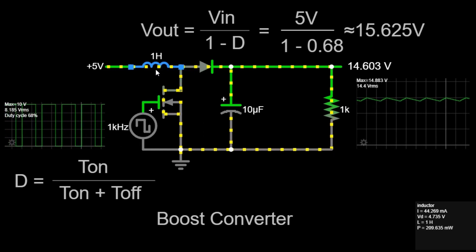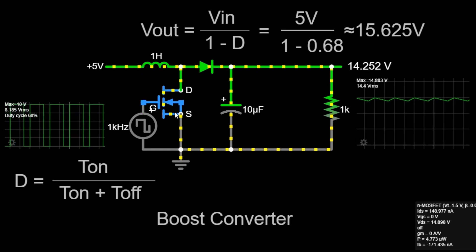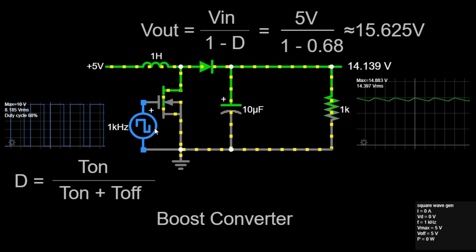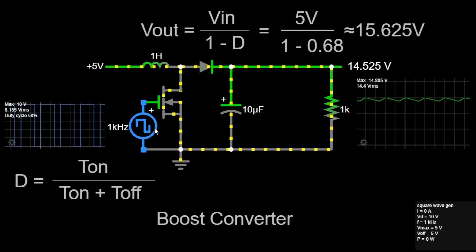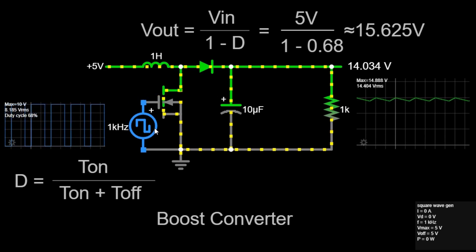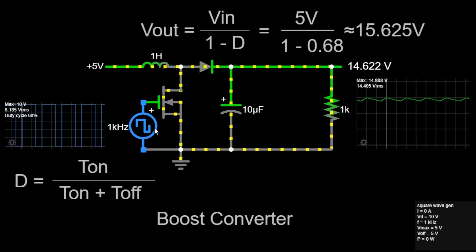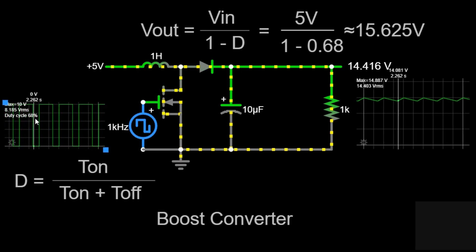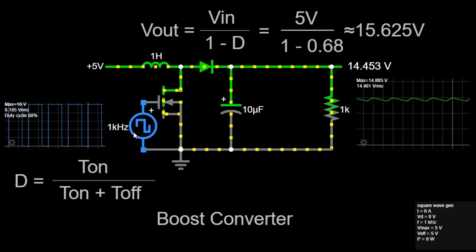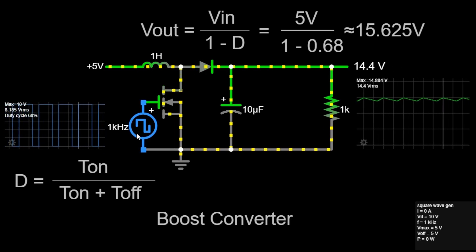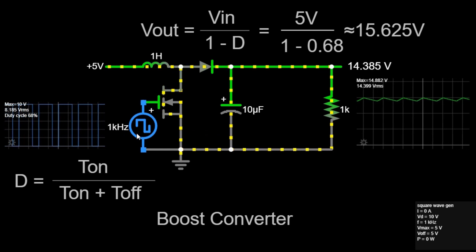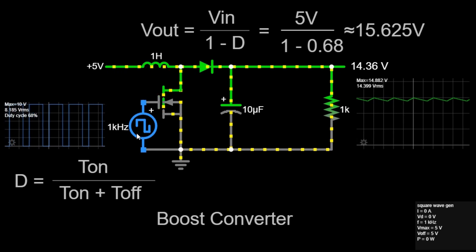Third, we have the switch. In our circuit, a square wave generator acts as the switch. It alternates between connecting and disconnecting the inductor to ground. The switching frequency here is 1 kHz with a duty cycle of 68%. The switch is crucial in controlling the inductor's connection to the ground. It regulates the flow of current through the inductor and the charging and discharging phases of the inductor.